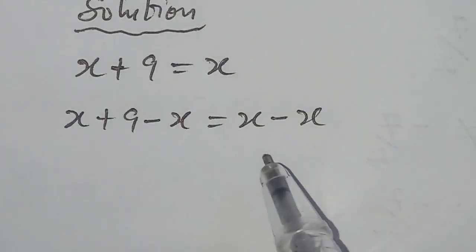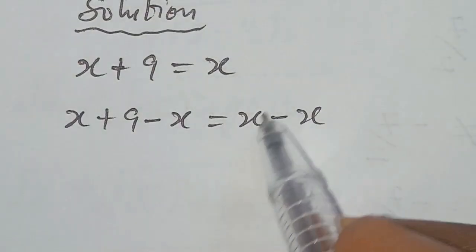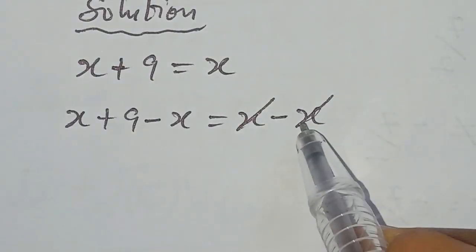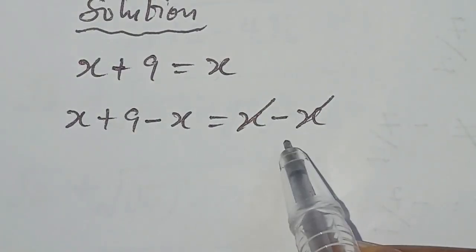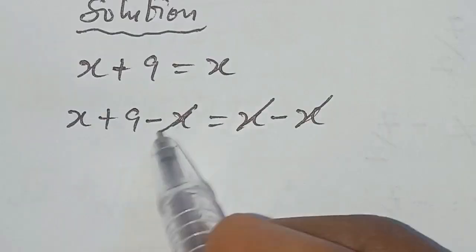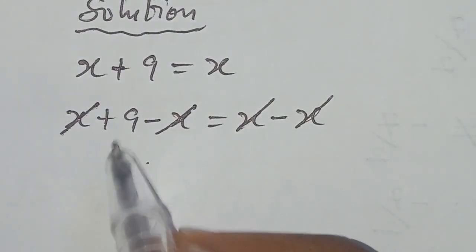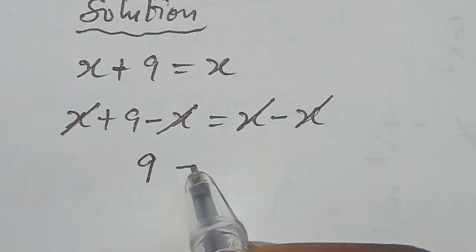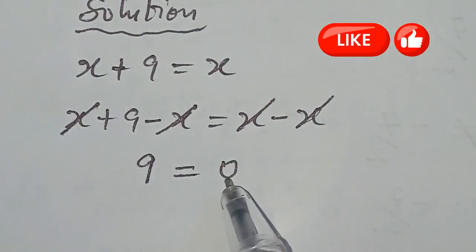So from here, we discover that this x we cancel out with this x to give this side to be 0, and this we cancel out with this to leave this side to be 9. And we have 9 equal to 0.